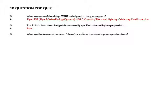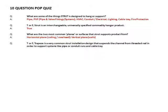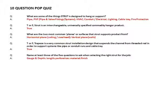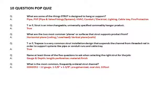What are the two most common planes or surfaces that strut supports product from? Horizontal plane and vertical plane. True or false: trapeze is a very common strut installation design that suspends the channel from threaded rod in order to support systems like pipe or conduit runs and cable tray. True. Name at least three of the five questions to ask when selecting the right strut for the job: gauge and depth, length, perforation, material, finish. What is the most common, frequently ordered strut channel? G582-OS1: 12-gauge, 1-and-5/8-inch by 1-and-5/8-inch, pre-galvanized, oval slot, 10-foot.